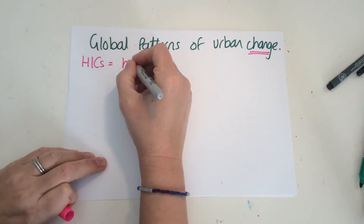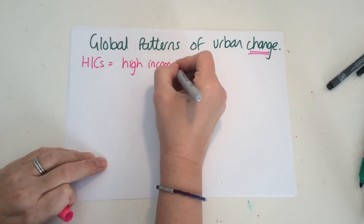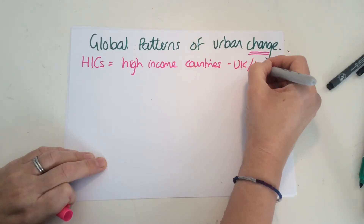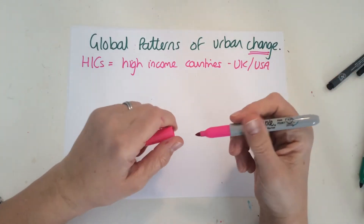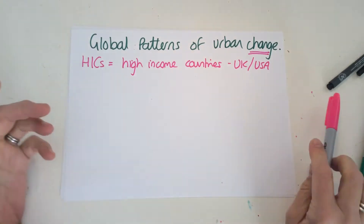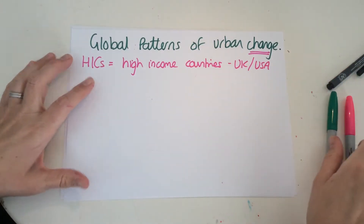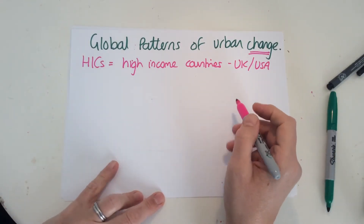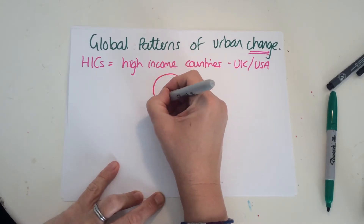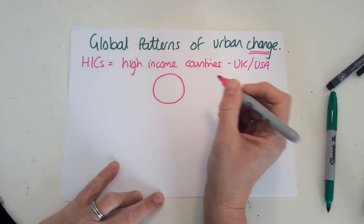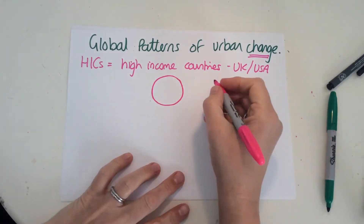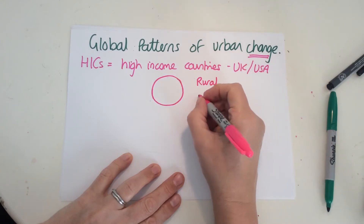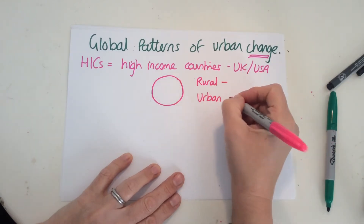HICs — high income countries — are countries like the UK, USA, Canada, Germany, Spain, France, and Poland. If we think about a pie chart of the world's population, some people will live in rural areas and some will live in urban areas.